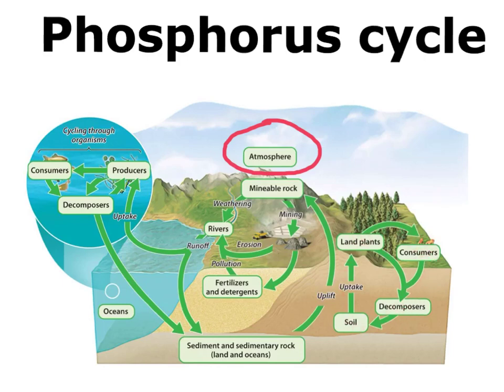It's the same general approach in the ocean — the producers are getting phosphorus from the water itself, and then they're eaten by consumers, which eventually die and go down to decomposers. That keeps on going in its own little cycle as well.